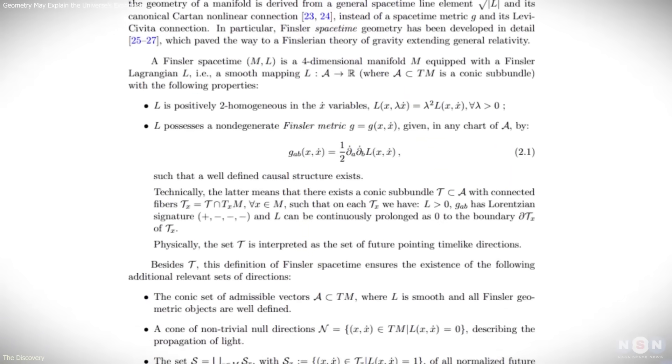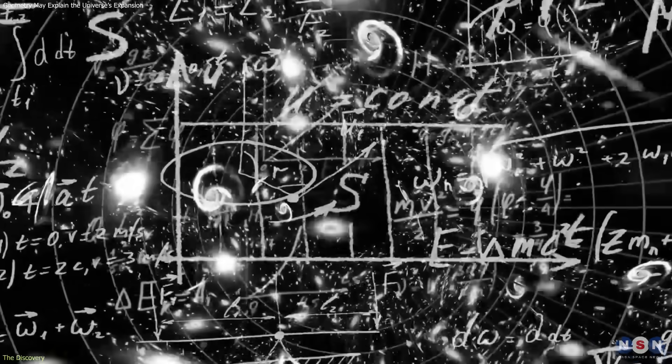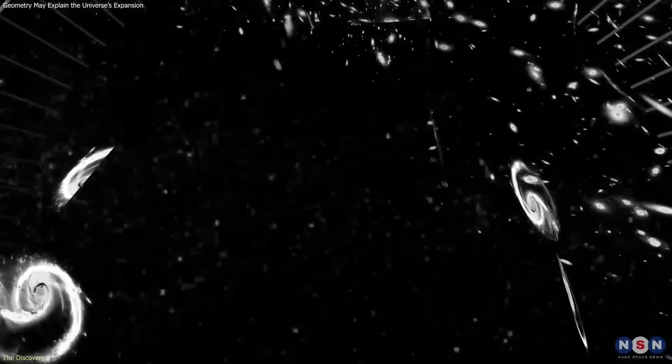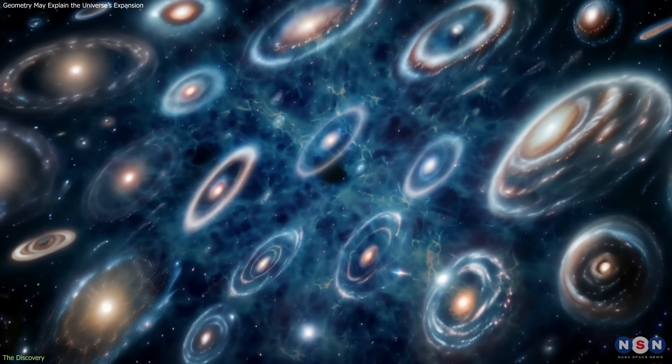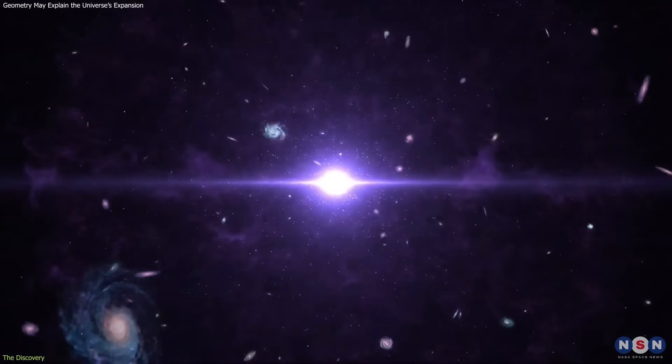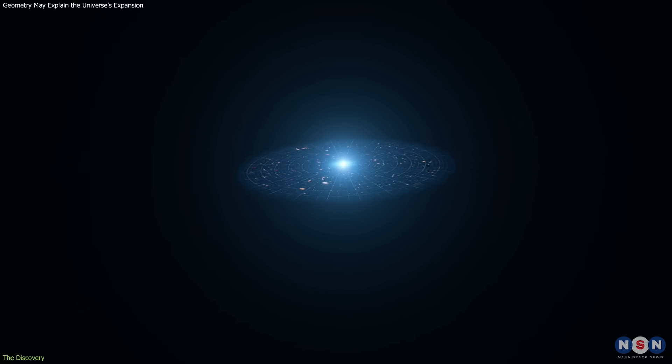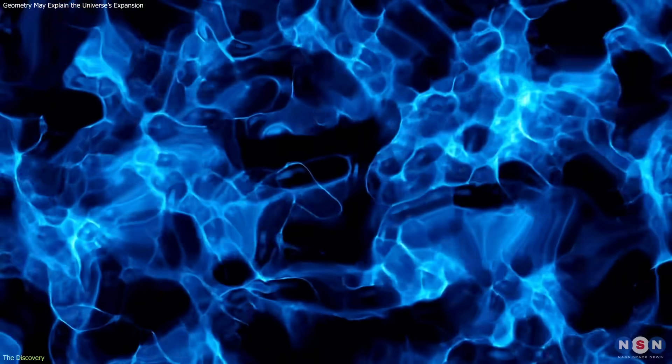Using this framework, the researchers derived a new version of the Friedman equations – the core equations describing cosmic expansion. Their solution revealed something striking. Even without a cosmological constant or dark energy term, the model produces accelerating expansion. In other words, the acceleration may emerge as a natural property of space-time geometry, not as the effect of an unknown energy.